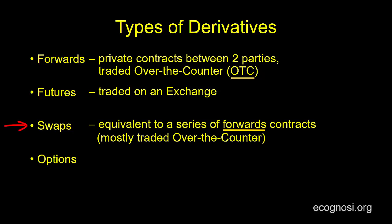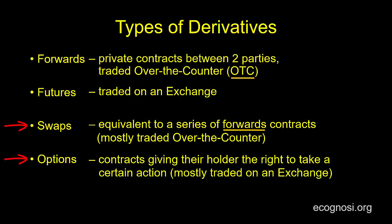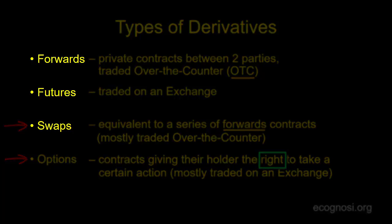Now as regards our final derivative instrument — options — for the time being, let's suffice it to say that these are contracts giving their holder the right to take a certain action, to either buy or sell, and that options are mostly traded on exchanges. One example being the Chicago Board Options Exchange. The fact that options give the holder the right but not the obligation to take a certain action makes it clear why they are called options, but it's also the factor that mainly differentiates them from the other three types of derivatives.